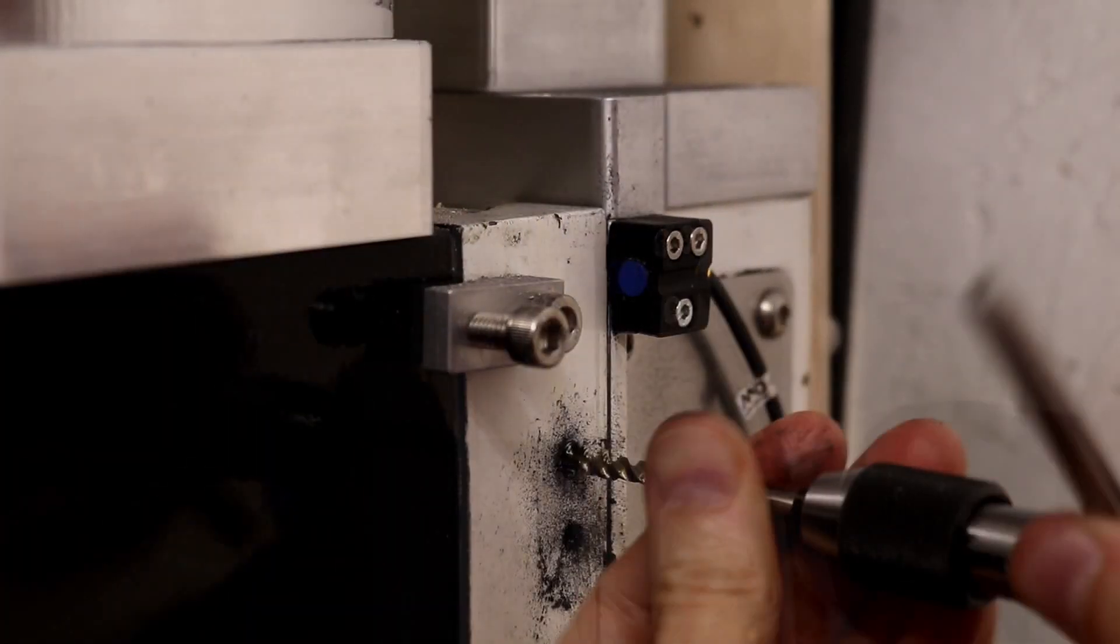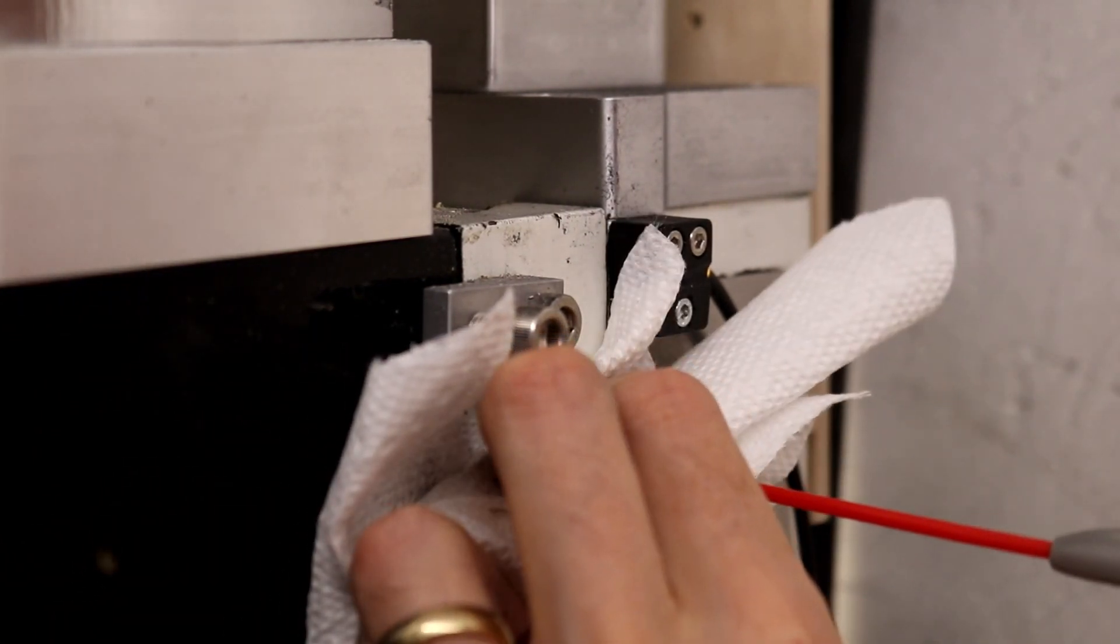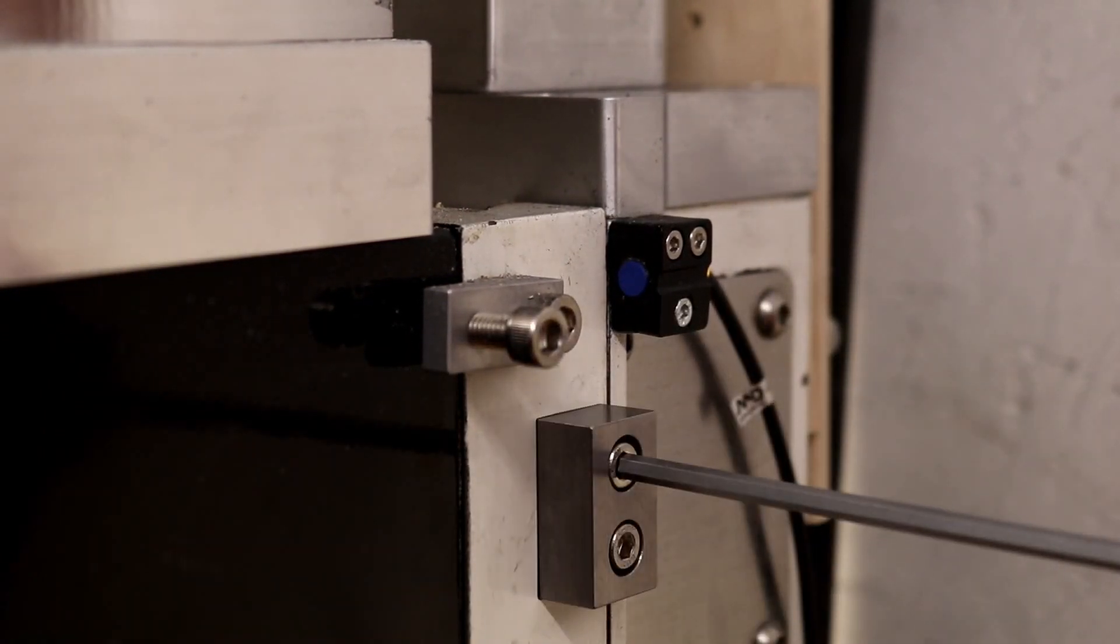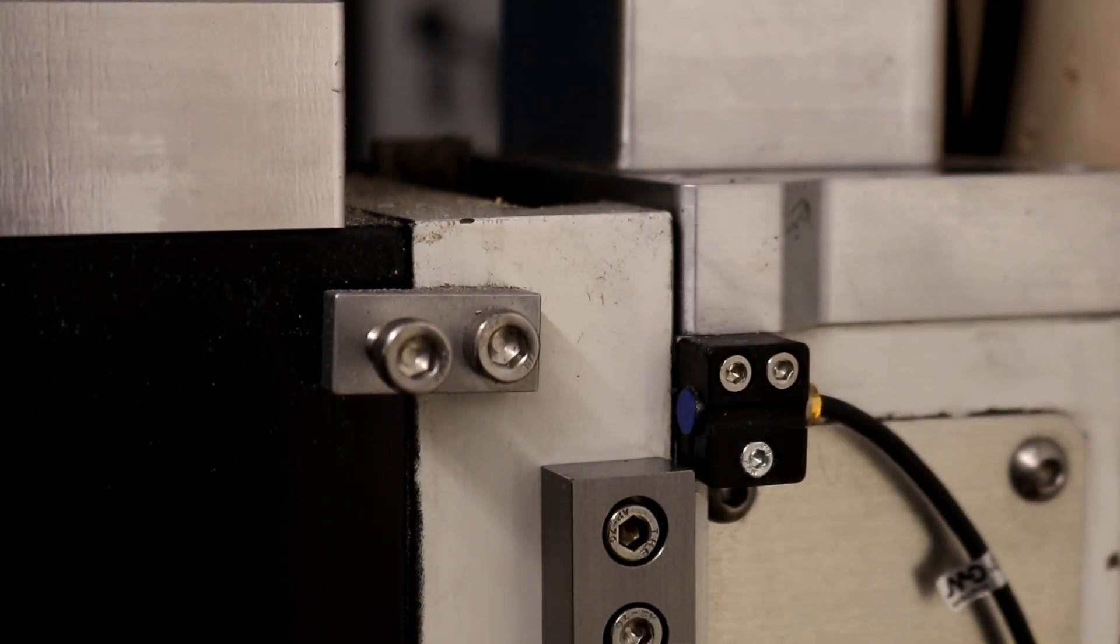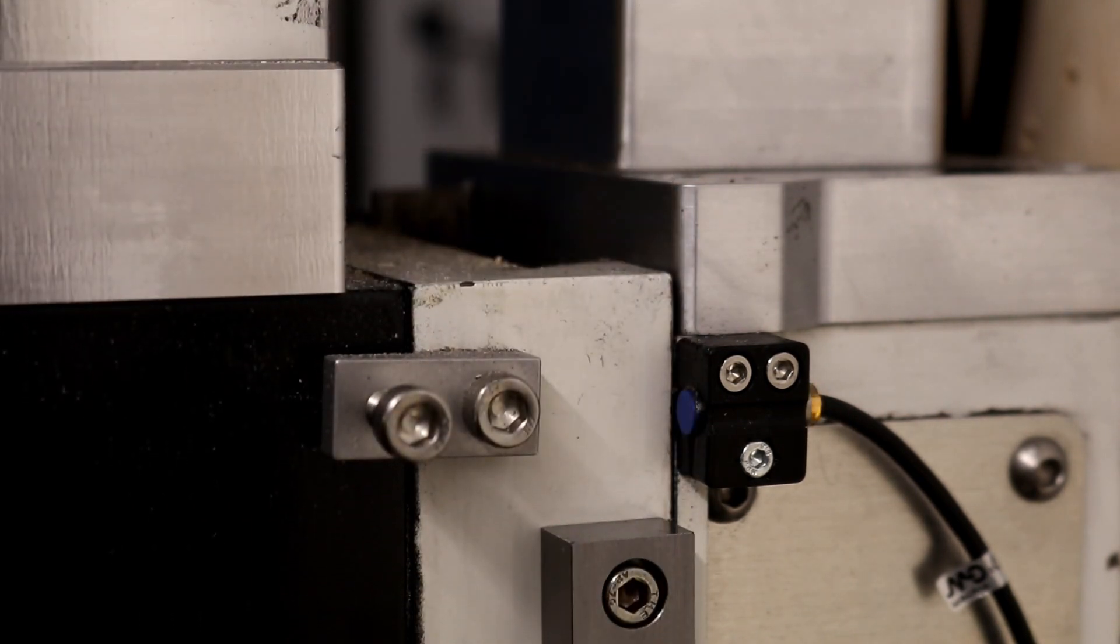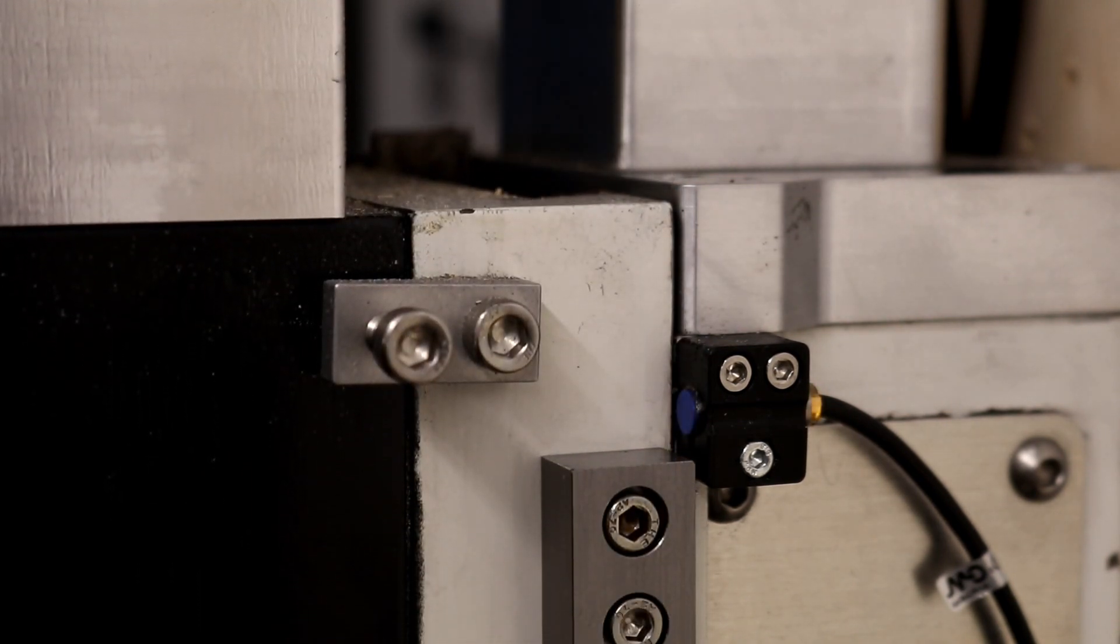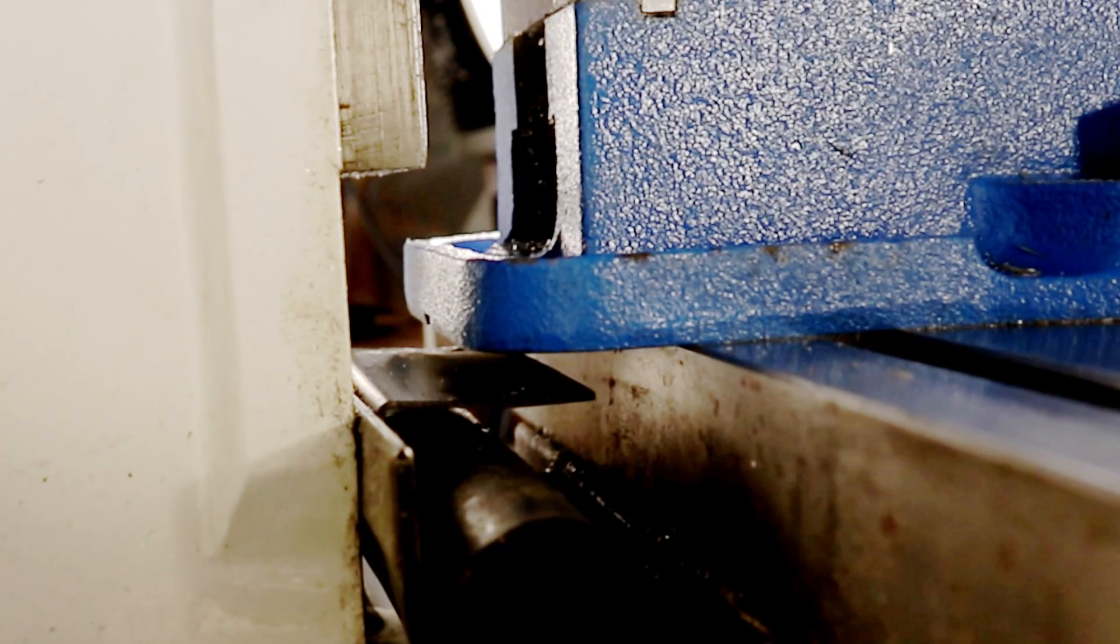The way LinuxCNC uses a homing switch is that it always searches in the same direction. You set the direction, but it will always search in that same direction until it detects the sensor. Then it backs off and then more slowly approaches the sensor. The axis can then be moved a known distance to a convenient starting location, in this case the upper limit of the z-axis, and set that as the origin for the axis.